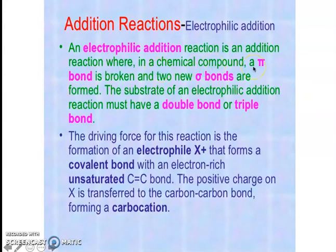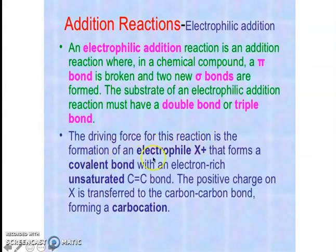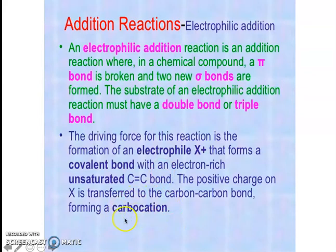This addition reaction can take place only among unsaturated compounds. The substrate is an unsaturated compound where the pi bond is first broken and two new sigma bonds are formed. The substrate must have either a double bond or a triple bond. The driving force is the formation of an electrophile that forms a covalent bond with an electron-rich unsaturated C=C bond, and the reactive intermediate formed is a carbocation.